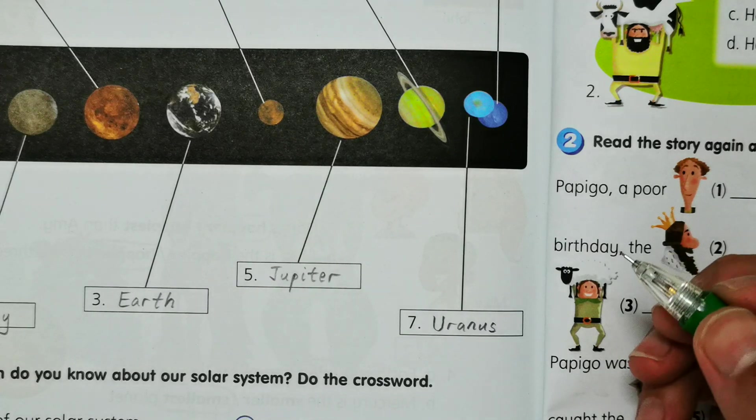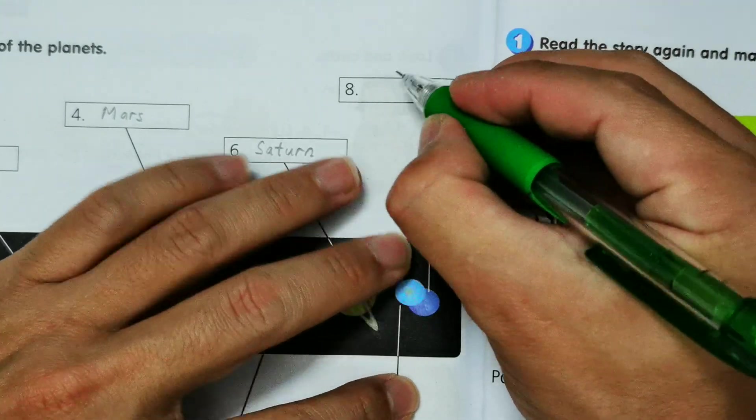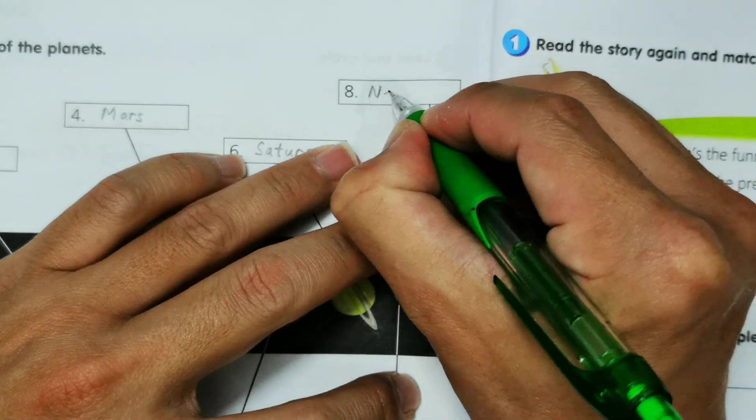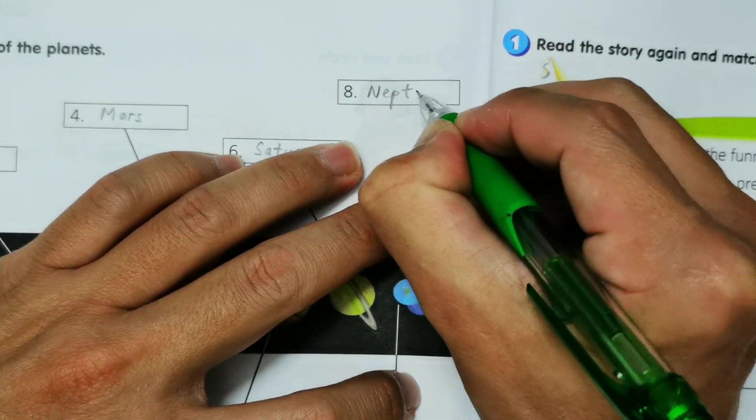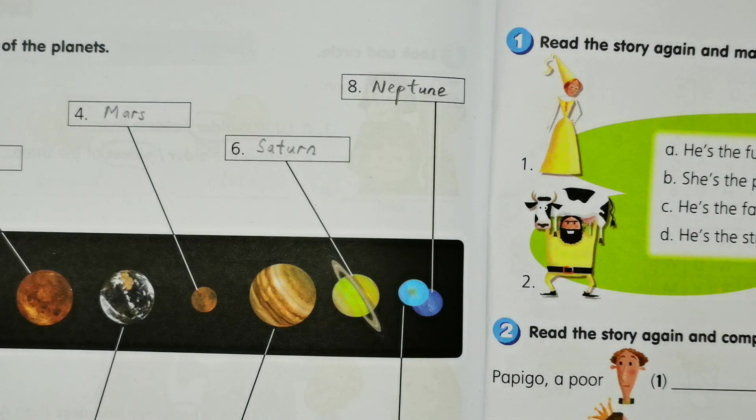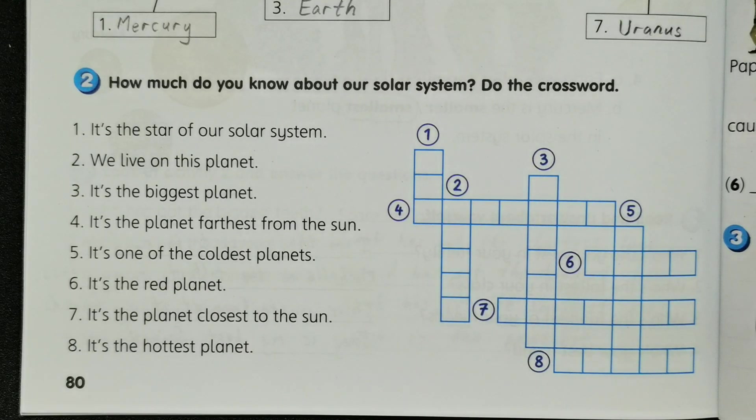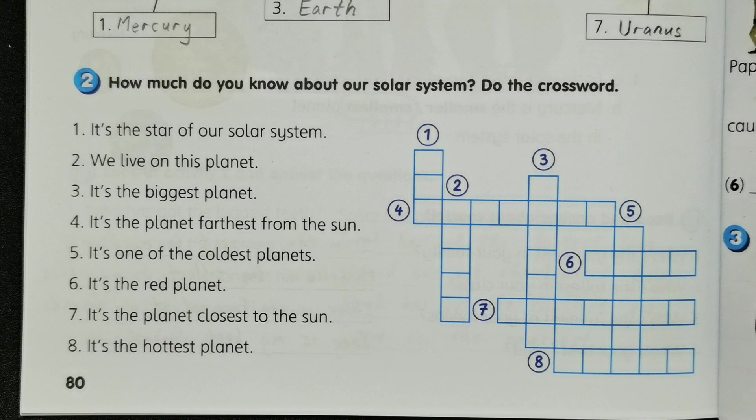So now we move on to Activity 2: How much do you know about our solar system? Do the crossword. Okay, number one is the star of our solar system.